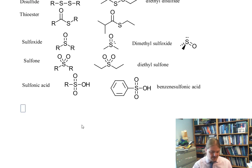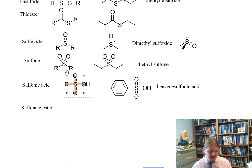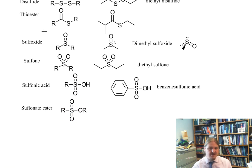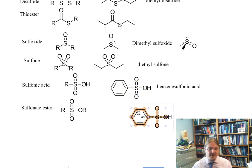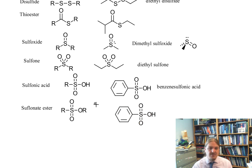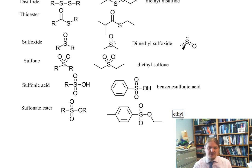We may have also encountered sulfonate esters before. This is a derivative of the sulfonic acid where instead of having an OH, we have another alkyl or hydrocarbon group attached. Most likely we've encountered these as toluene sulfonate or other sulfonate esters that are good leaving groups — a way of converting an alcohol into a good leaving group. Here's ethyl toluene sulfonate.